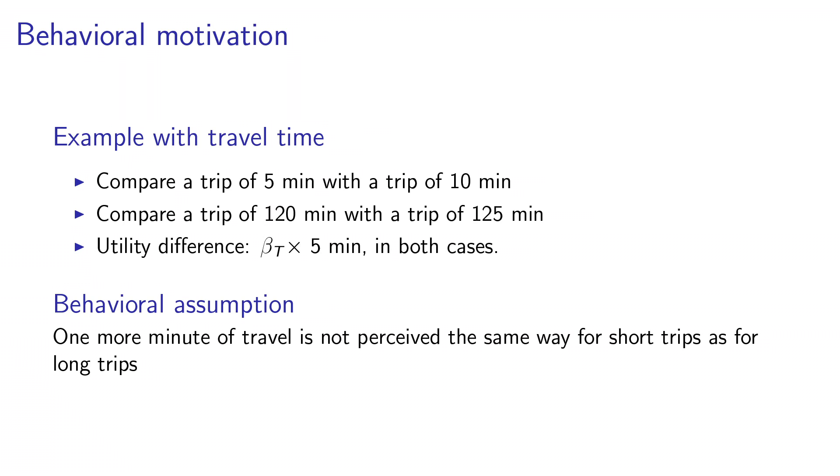Meaning that in both cases, when you calculate the probability, the five minutes will play the same role. But you may argue that five more minutes for a trip of five minutes will be actually perceived as more penalizing than five more minutes in the context of a two-hour trip. This is what we would like to model: the fact that one more minute of travel time will not be perceived the same way by the traveler for short trips and for long trips. How do we do that?